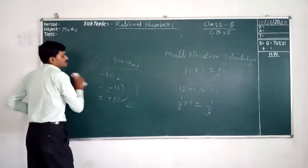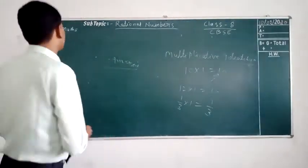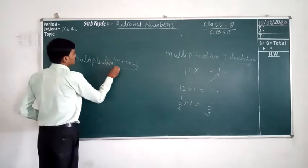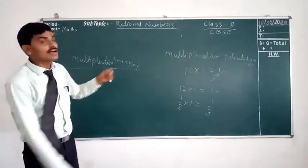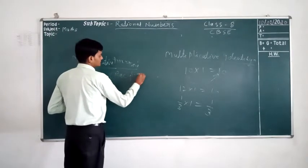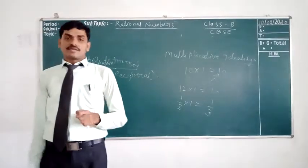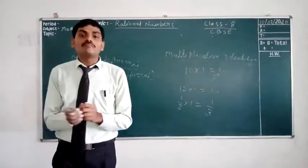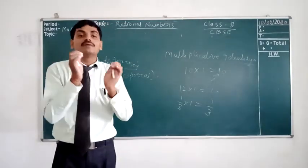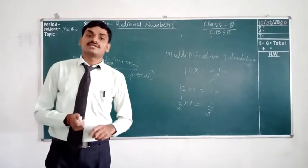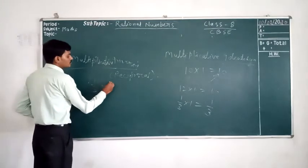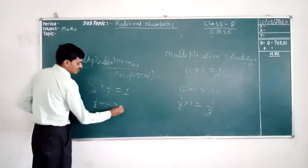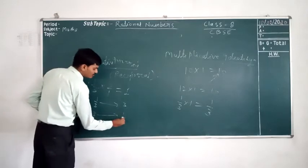Now come for the multiplicative inverse. The multiplicative inverse is also known as the reciprocal. If the multiplication of two numbers gives a result of 1, then both numbers are the multiplicative inverse of each other. For example, 1/3 × 3 = 1. So 1/3 is the multiplicative inverse of 3, and 3 is the multiplicative inverse of 1/3.